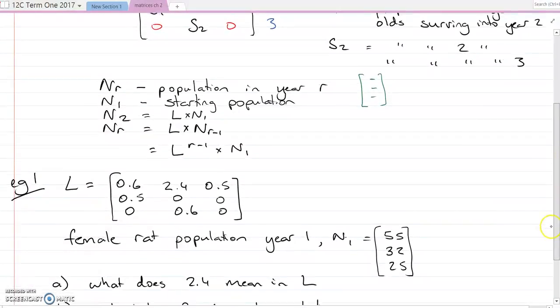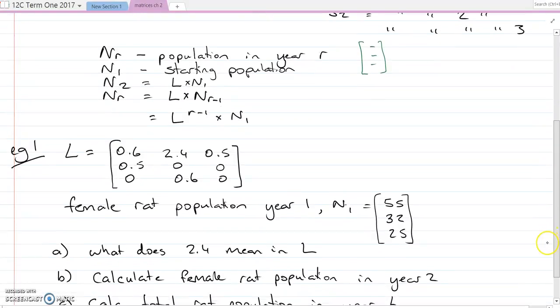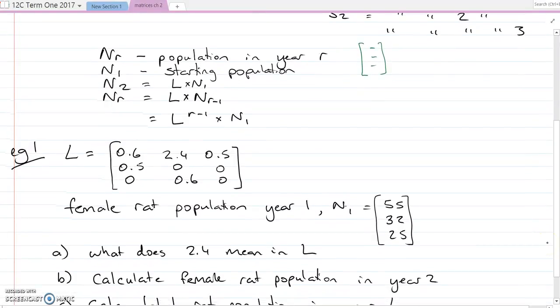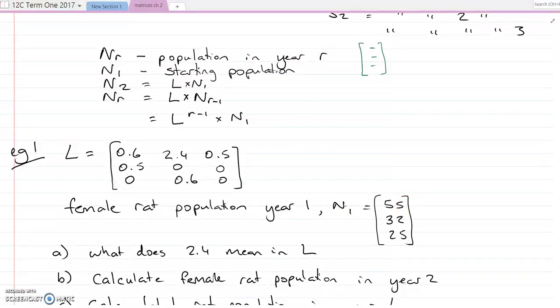So we'll look at an example. Here's a Leslie matrix of a female rat population, and the year one population is 55 one-year-olds, 32 two-year-olds, and 25 three-year-olds.